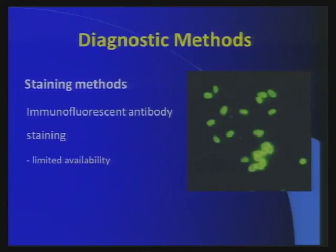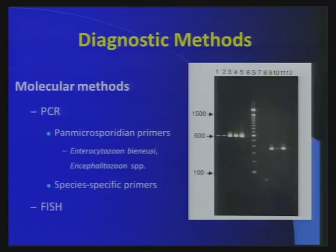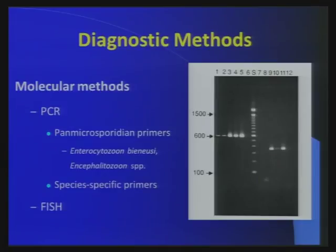There are also immunospecific staining methods, but they are not available on the market. There is also PCR, which can tell you the species — genus, species, and subspecies. So today, if you want to diagnose microsporidia, PCR may give a more definitive diagnosis, though it is not the gold standard yet because not every lab is using it. Most labs still rely on staining.